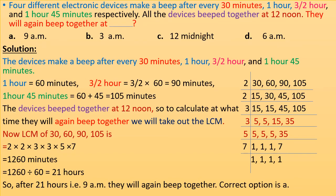Four different electronic devices make a beep after every 30 minutes, 1 hour, 3/2 hours, and 1 hour 45 minutes respectively. All the devices beeped together at 12 noon. We will convert the times into minutes: 1 hour = 60 minutes, 3/2 hours = 90 minutes, 1 hour 45 minutes = 60 + 45 = 105 minutes.